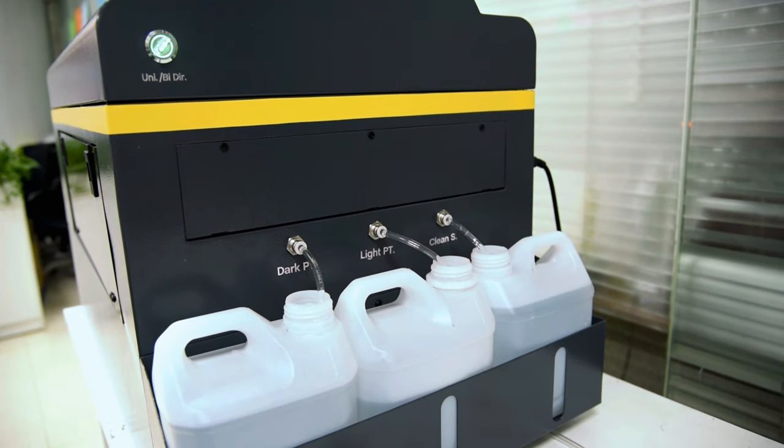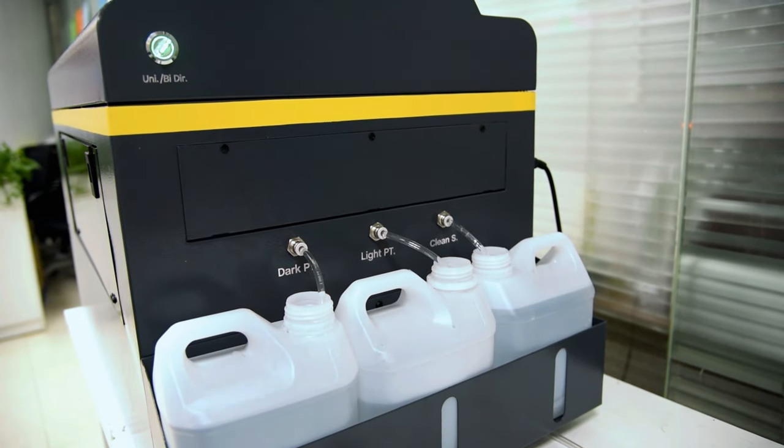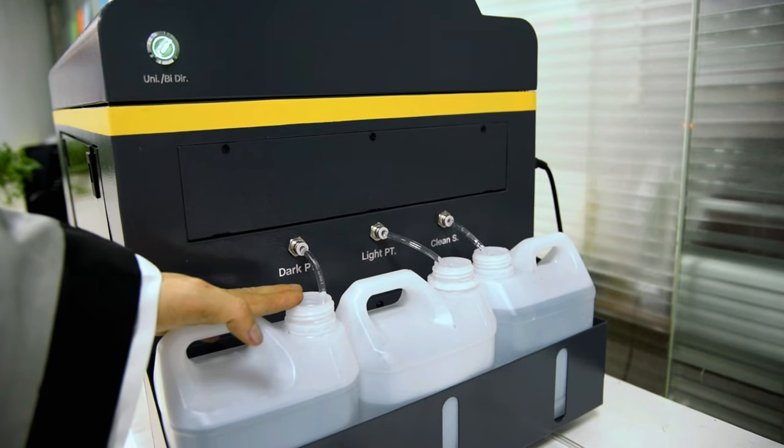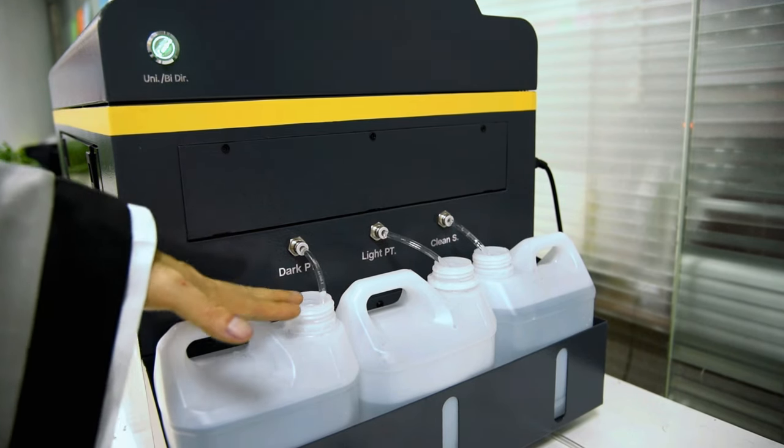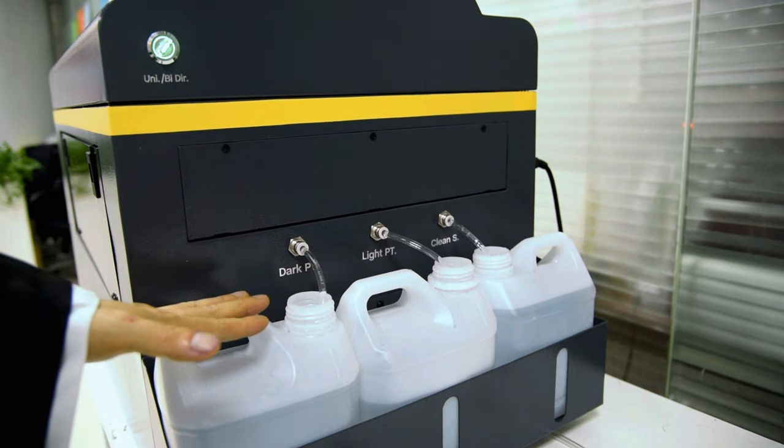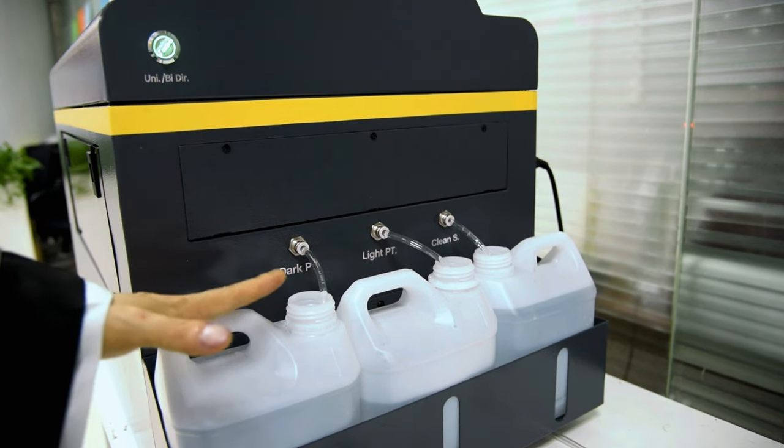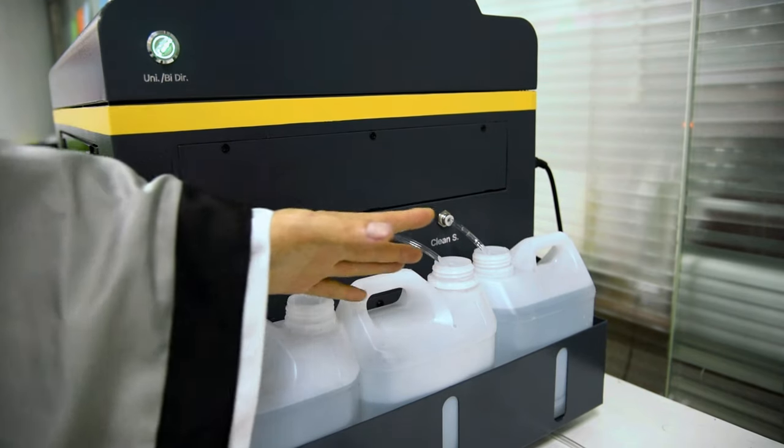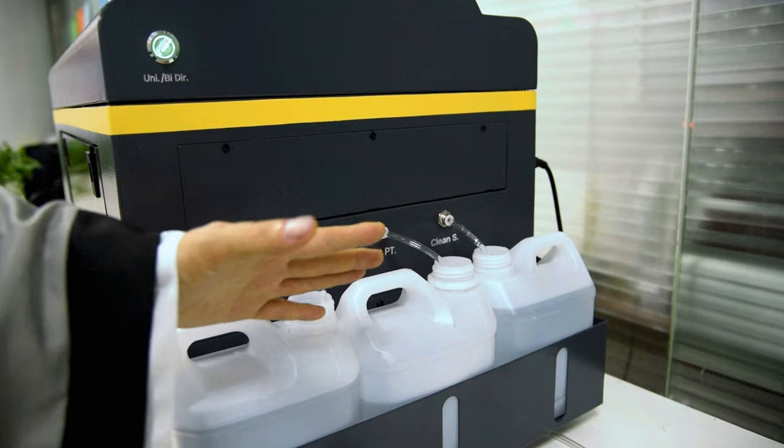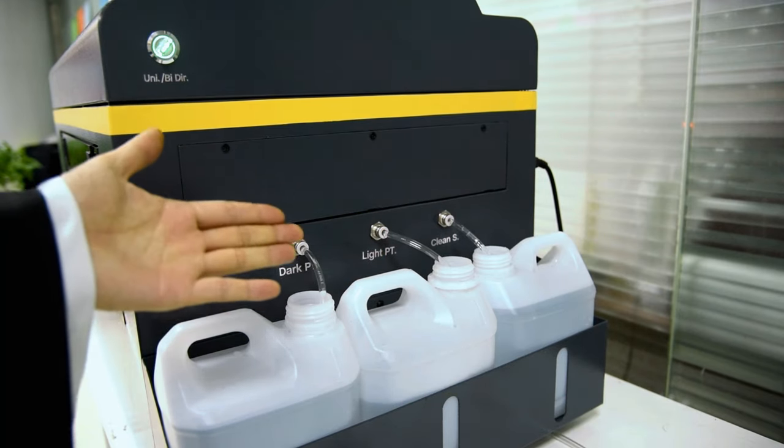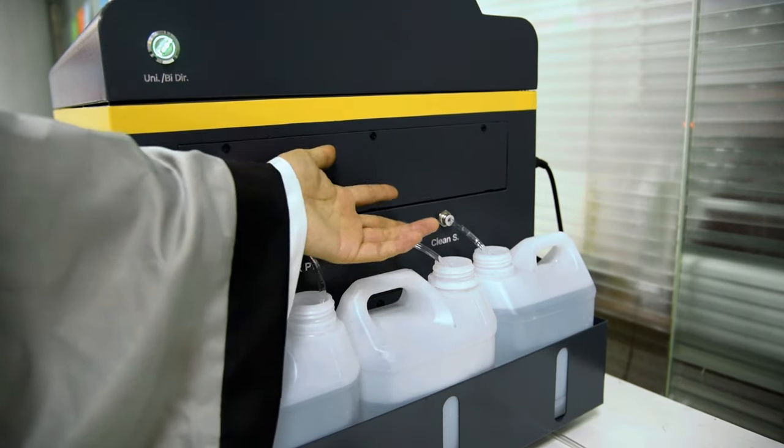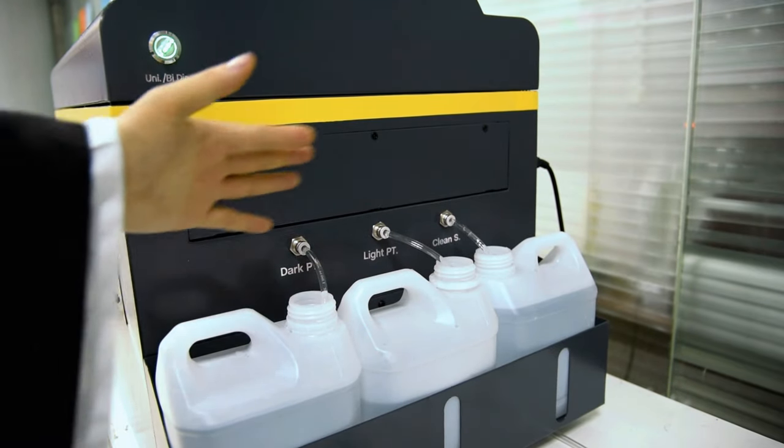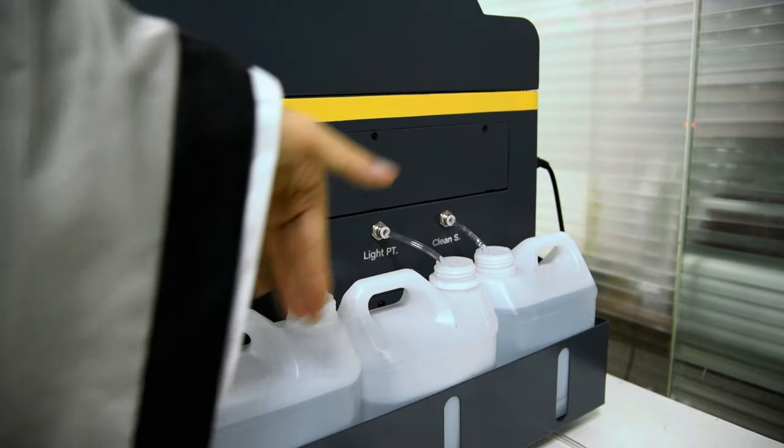Lots of other models of pretreatment machines only have one or two bottles, and you need to convert the tubing for each liquid by yourself. For example, first if I want to print pretreatment on the light t-shirt, I put the tubing for the light t-shirt. When I want to do pretreatment on the dark t-shirt, I need to convert the tubing to another bottle by hand. But for our Focus newest blue gadget, it's automatic.